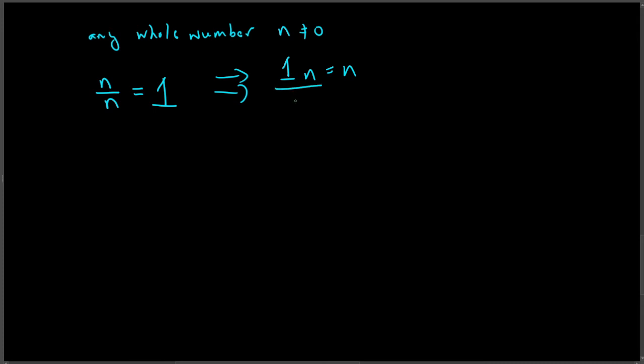And if I divide both sides by n, I get the one equals n over n. And so if I take any number, three over three, that's one. Six over six is one.